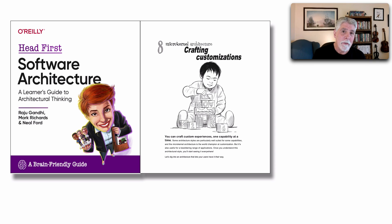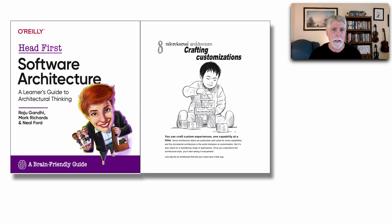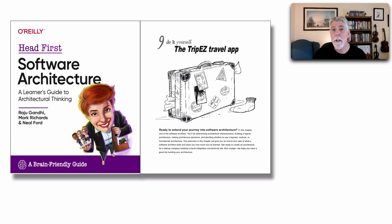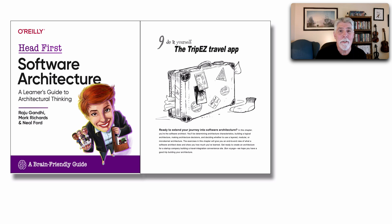We have something unique in our Head First book that isn't in any other Head First book. We had quite a challenge because we're not coding or learning a programming language. We do have plenty of exercises, but we wanted a way to bring everything together, so we came up with the idea of do-it-yourself chapters. Chapter nine is our first do-it-yourself chapter, where we introduce an architectural kata — a problem — and the entire chapter is for you, the reader, to go from start to finish and create an architecture using a monolithic architectural style.